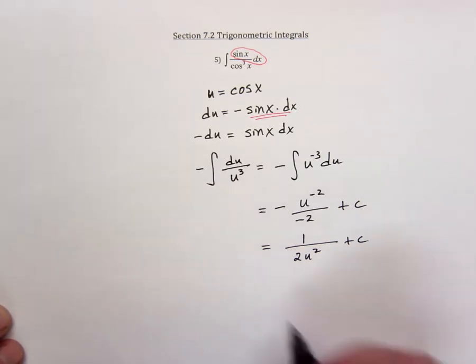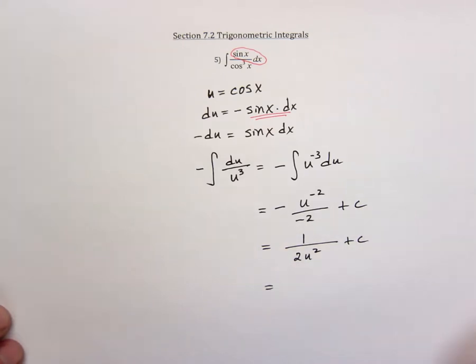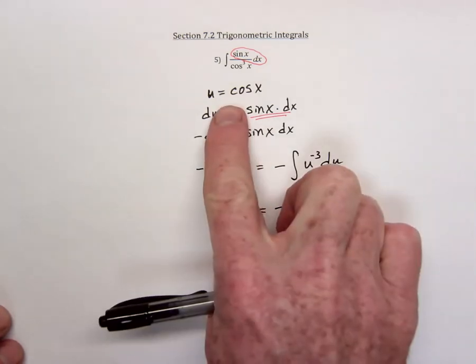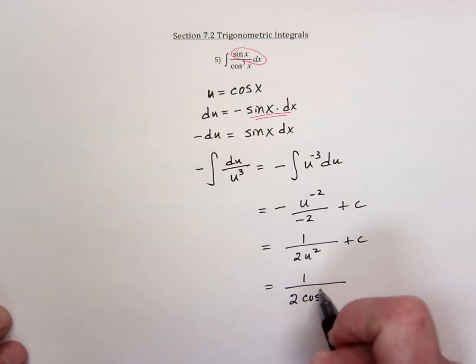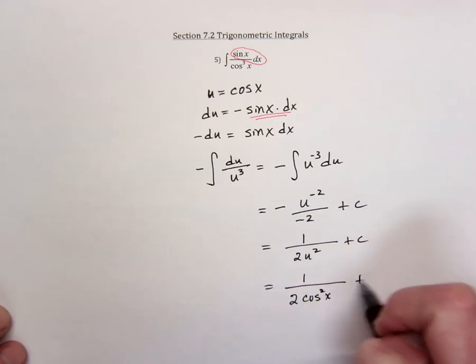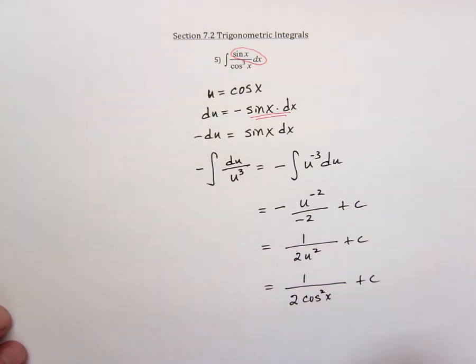And finally, replace u with what it's equal to, which is that cosine of x. So the answer is 1 over 2 cosine squared of x in the denominator, and then a plus c.